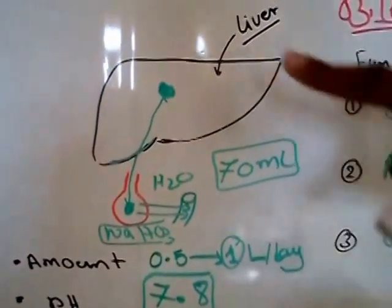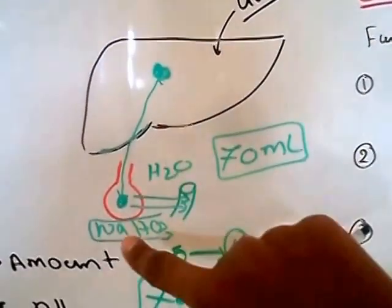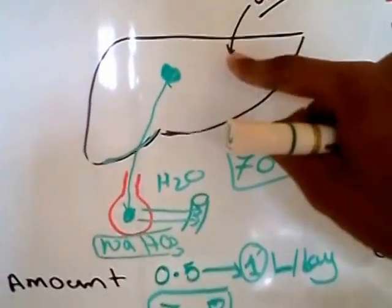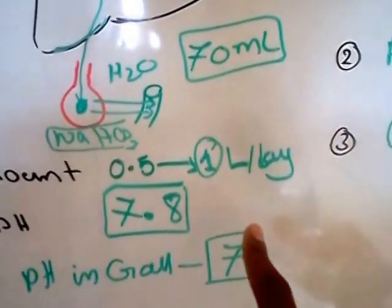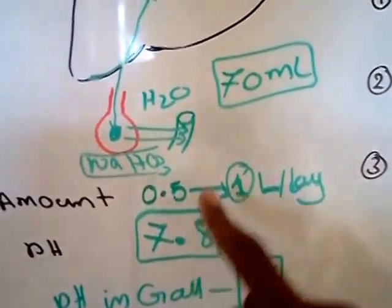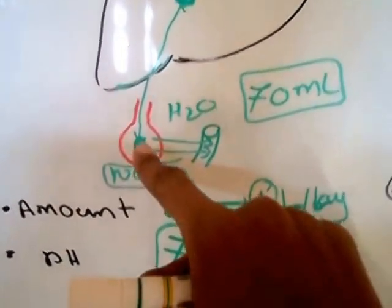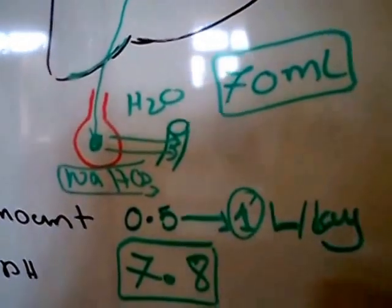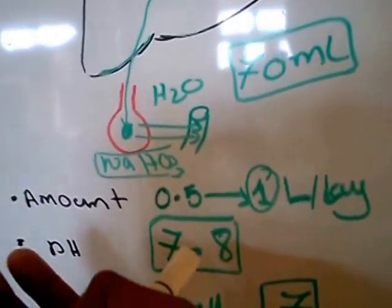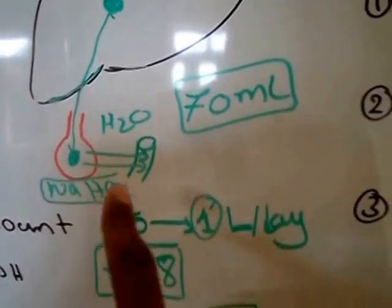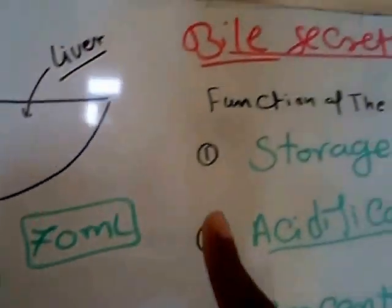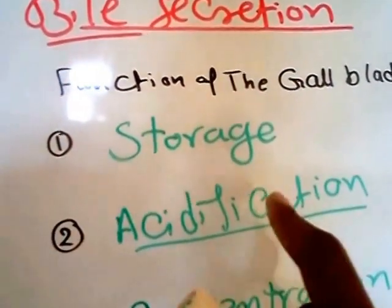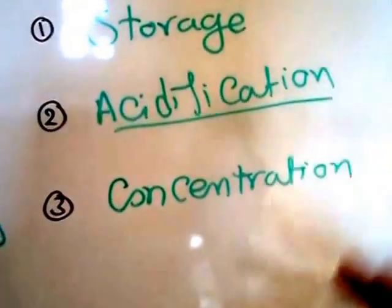Let's review. The liver produces bile, which will be transported into the gallbladder. The bile amounts from half to one liter per day with a pH of 7.8. This pH will be lower in the gallbladder — it will be 7 — due to the process of acidification by removing sodium bicarbonate, and concentration by removing water from the bile in the gallbladder, converting that one liter into 70 ml. The gallbladder functions are: storage, acidification, and concentration.